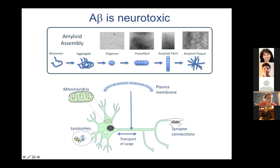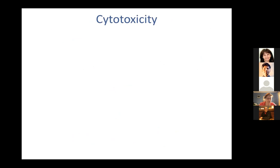Simplifying the pathway from monomer to aggregate to oligomer to protofibril to amyloid fibril and then amyloid plaque, we were interested in understanding how some of these species — whether a mixture, a continuum, or an individual species — might actually be interacting with neuronal cells and causing the dysfunction and cell death we see in Alzheimer's disease. This is a very simplified slide showing a neuron, pointing out where the damage might be happening: the plasma membrane, mitochondria, lysosomes, nucleus, synapse connections, and axonal transport, each surrounded by membrane.